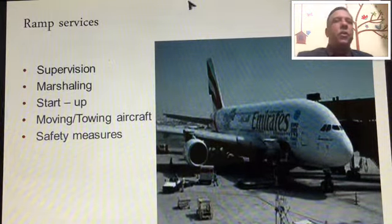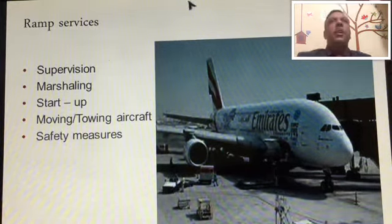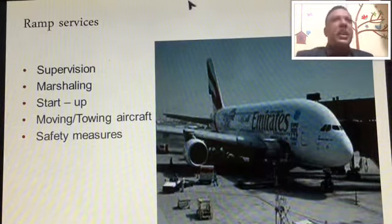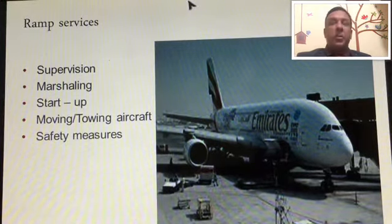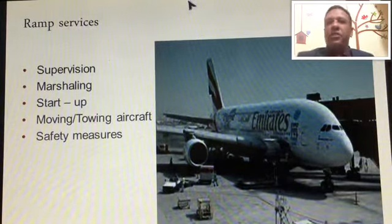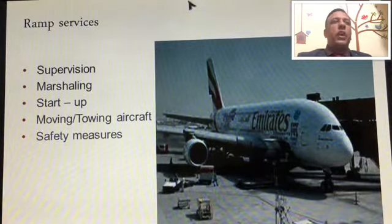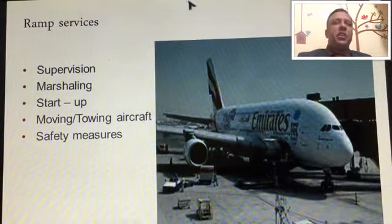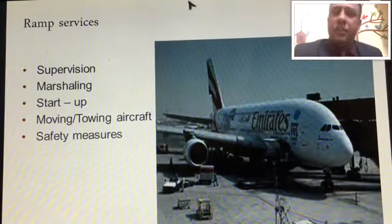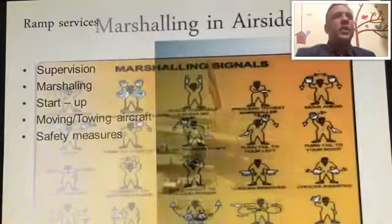The second element is marshaling — guiding the aircraft with the proper method of communication between the captain and the ground staff at the airport. The third is startup, the fourth is moving and towing of aircraft, and the fifth is safety measures. We'll be studying these step by step.